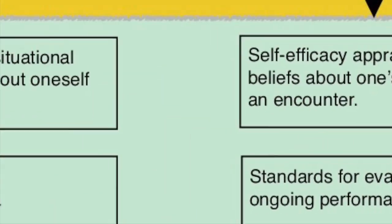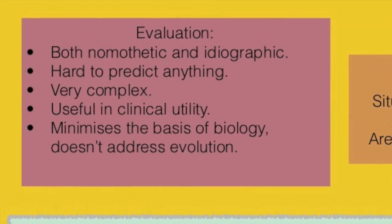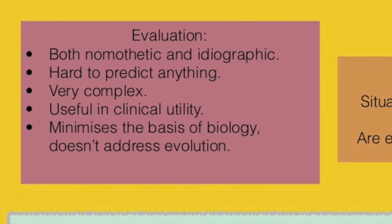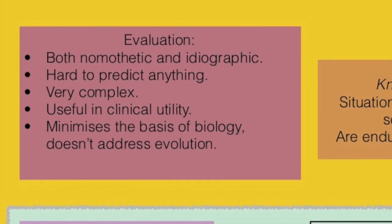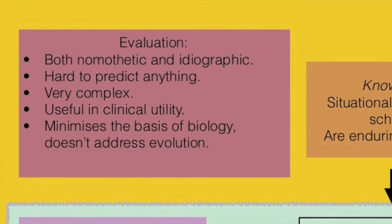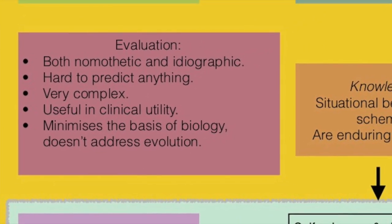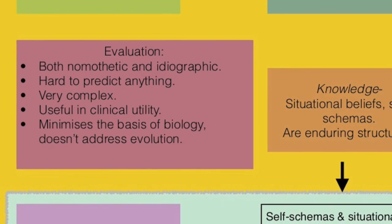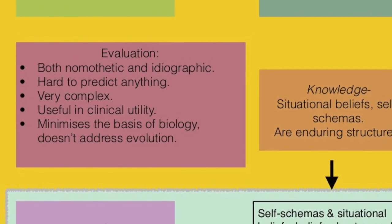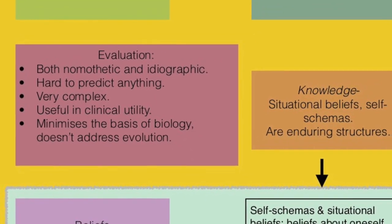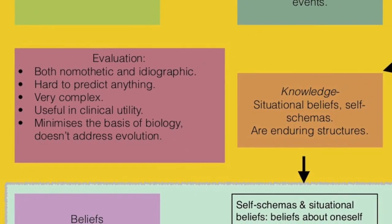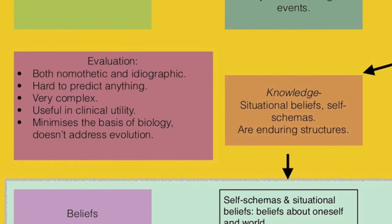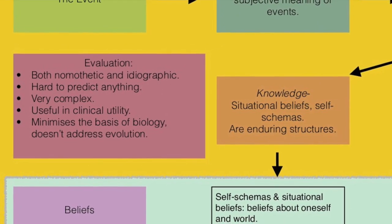To evaluate this Knowledge and Appraisal Personality Architecture, it is both nomothetic and idiographic. However, it is very complex and it is very hard to predict anything with this theory. It is, however, useful in a clinical utility, but it minimizes the basis of biology and doesn't address evolution.